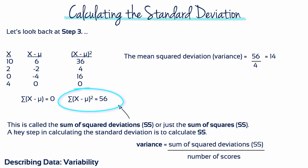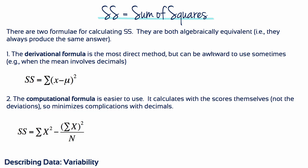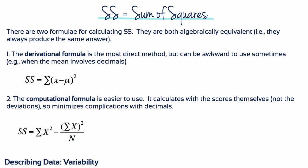This is called the sum of squared deviations, or just the sum of squares. It's a key step in calculating the standard deviation, and it's a useful term that will come back in the inferential statistical techniques of hypothesis testing. There are two formulae for calculating sum of squares, and they're both algebraically equivalent — they always produce the same answer. The first is the definitional formula, which is the most direct method and the one we've just used, but it can be awkward to use when the mean involves decimals. The second is called the computational formula — it's easier to use because it calculates with the scores themselves, not the deviations, minimising complications with decimals.